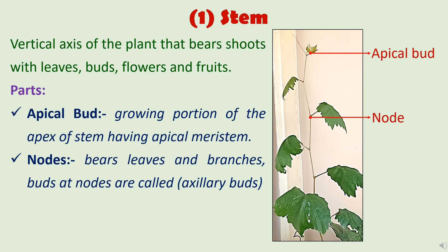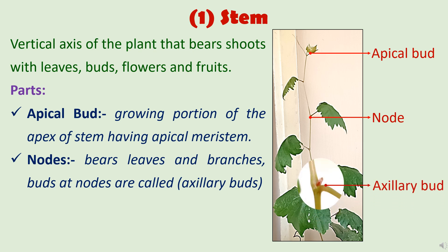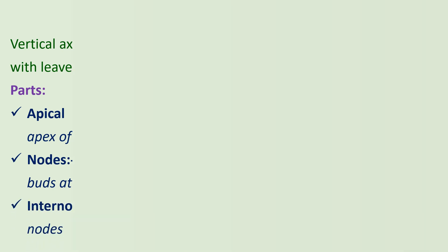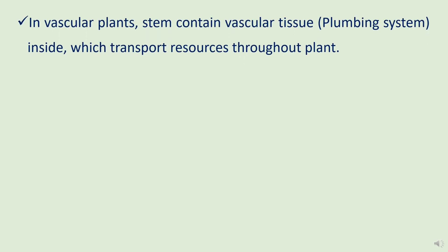Then come nodes. Nodes bear leaves and branches, and they also have small buds called axillary buds — you can see an enlarged view of the axillary buds in the picture. The section between two nodes is known as the internode. In vascular plants, the stem contains vascular tissues inside, and the main function of this vascular tissue is to transport resources throughout the plant. That is why it is also called the plumbing system of a plant.